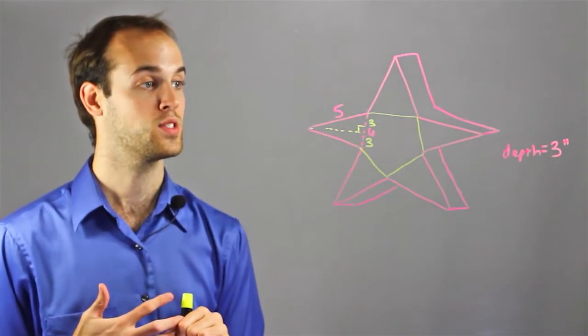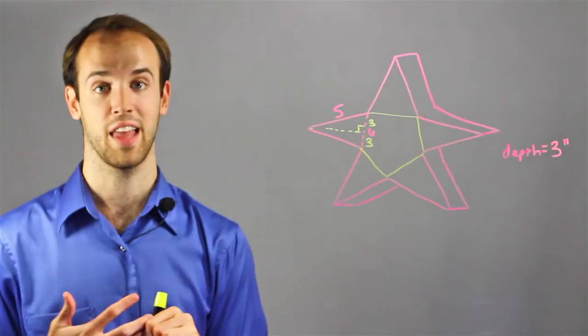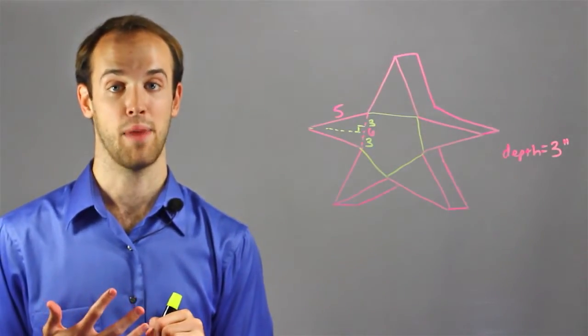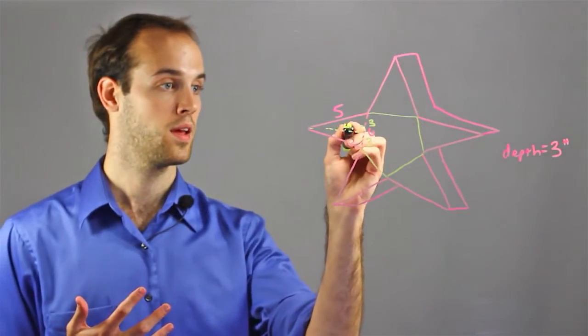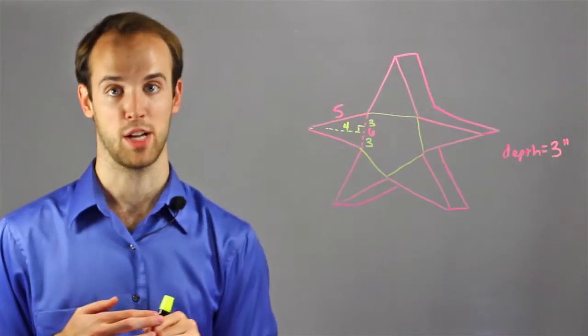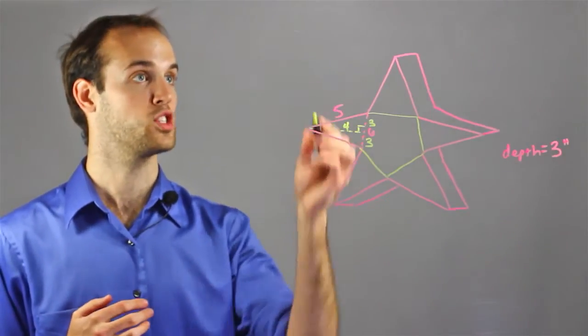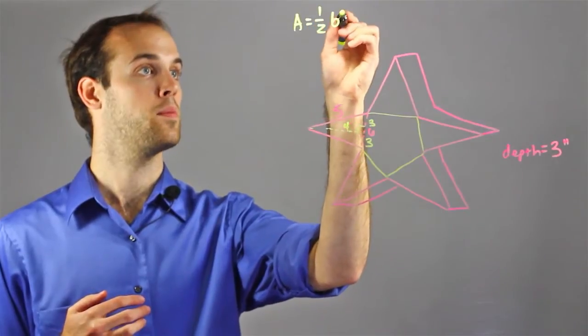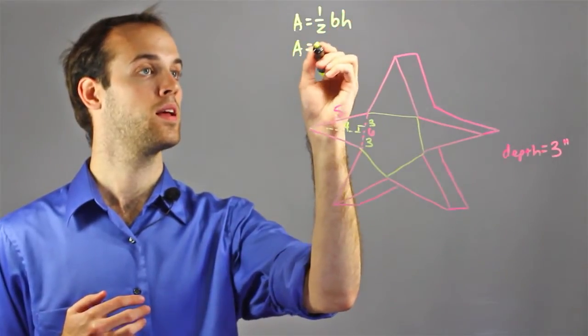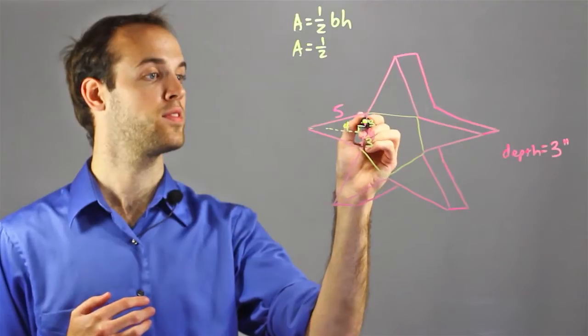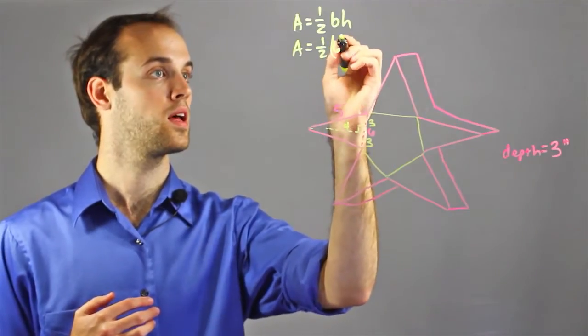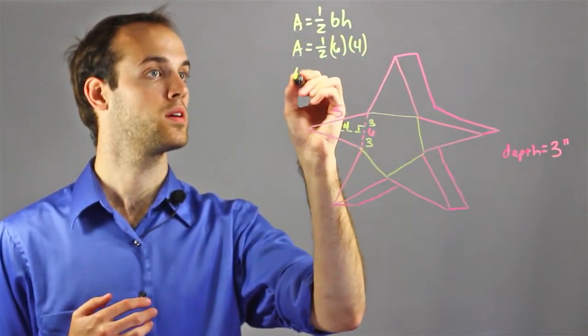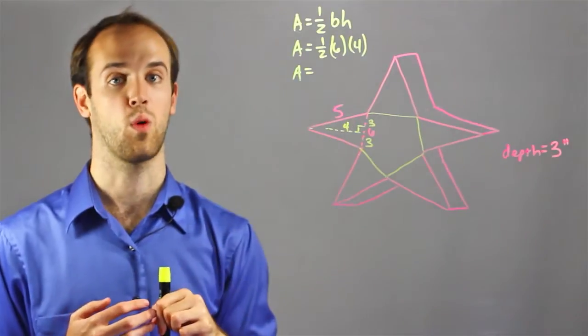And I know that if the hypotenuse of a right triangle is five and one of the legs is three, the height must be four because it's a three, four, five special right triangle. So the area of this triangle is going to be one-half base times height, which is one-half six times four, which is one-half of 24, which is 12.